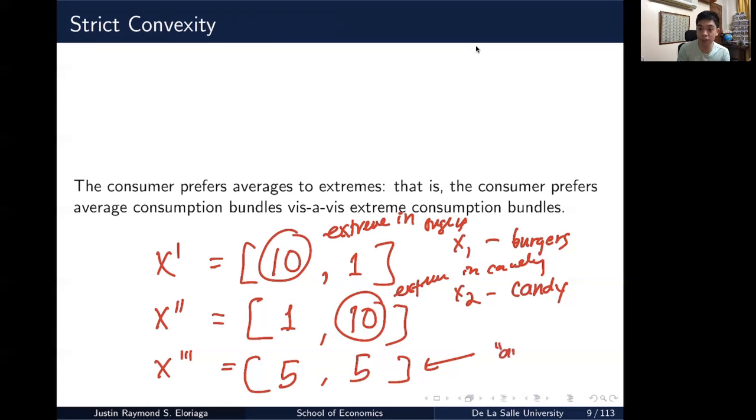And then you can sort of think that your X triple prime is like an average of the two bundles. So not as much burgers as bundle 1, just enough like 5, and not as much candy as bundle 2, maybe just 5, but it contains more candies than bundle 1 and more burgers than bundle 2. So it's like your middle ground. And in general, people tend to prefer middle things or balanced things or a balanced, in this case, sort of a diet or a balanced consumption plan than those extreme consumption plans. So that's the assumption of strict convexity. And those are the general assumptions of consumer preferences.